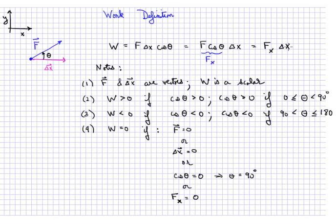So that's the definition. We'll see plenty of examples as we go forward. But here are some notes. First of all, please note that F and delta x are vectors. F is a force. Delta x is a displacement vector.